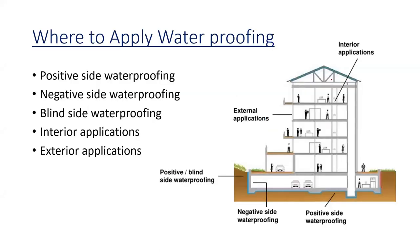Up to now we have discussed what waterproofing is and why we do it. Then we will discuss where to apply waterproofing. Normally there are different types of application sides: the positive side, negative side, blind side, interior, and exterior.